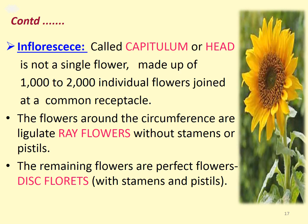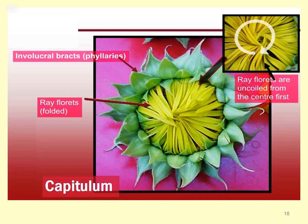The inflorescence is called a capitulum or head. It is not a single flower; it is made up of around 1,000 to 2,000 individual flowers joined at a common receptacle. The flowers around the circumference are ligulate ray flowers without stamens or pistils. The remaining flowers are perfect disc flowers with stamens and pistils. The diagram shows the ray floret uncoiled and folded, with involucral bracts called phyllaries surrounding the ray floret. The head is called capitulum.